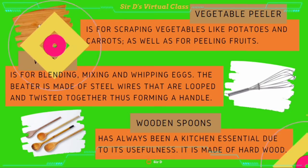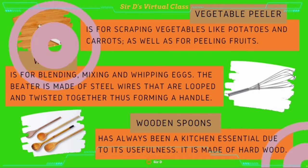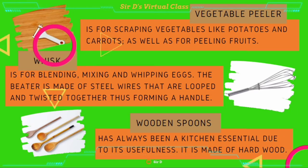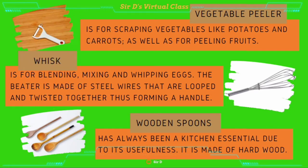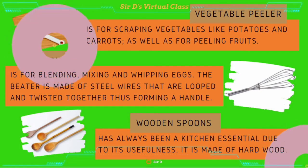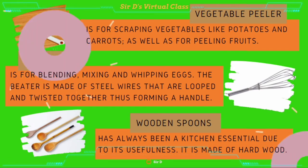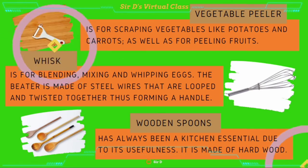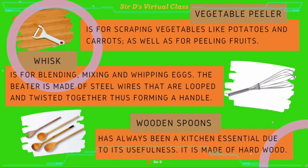Whisk is for blending, mixing, and whipping eggs. The whisk is made of steel wires that are looped and twisted together, thus forming a handle. Wooden spoons have always been a kitchen essential due to their usefulness. They are made of hardwood.